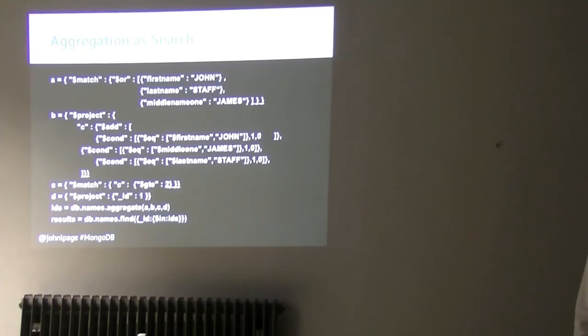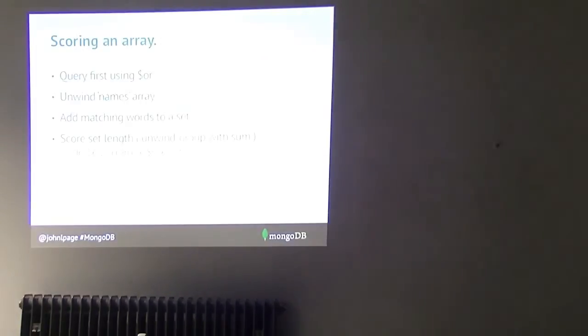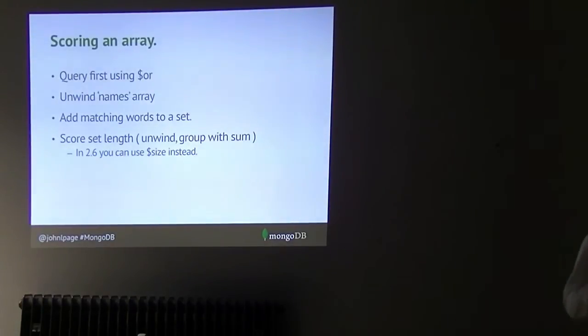That's a good job because there's a harder one coming. How do you do that if you're working on the array? How do I find anything where the array contains at least three of these values? The answer, again, is very similar. But when I get to the document with the array, I must unwind the array to make a separate document for each value. Work out the score and then group the array back together to calculate the score. In 2.6, we actually can shorten this slightly because we have a size of array operator. So we can filter the array and then just measure the size.